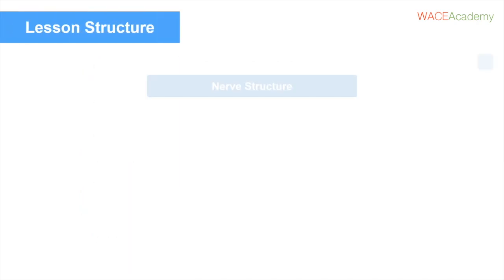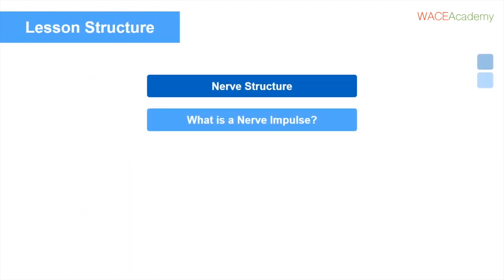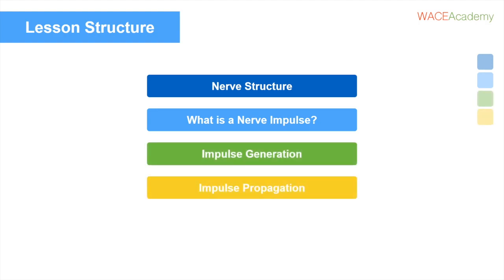Today we'll cover the structure of a nerve and what a nerve impulse actually is. We'll follow its path starting with impulse generation, how it travels along a nerve, and finally cover how the impulse is transferred across a synapse.